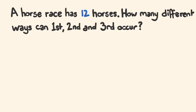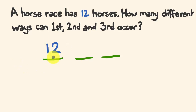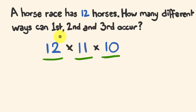Question two: a horse race has 12 horses — how many different ways can first, second, and third occur? Order very definitely matters here because we've specifically stated we want a first, a second, and a third. You've got three different spaces. For the first position, you have 12 possibilities. Once that horse has come first, you're left with 11 different possibilities for second, and then 10 for third. Multiplying through: 12 times 11 times 10 equals 1320 different ways.